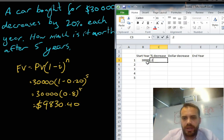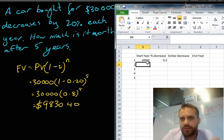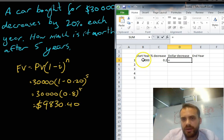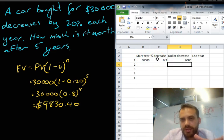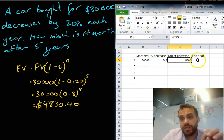It decreased by 20%, which I'm just going to put in our formula as 0.2 here. Now, if it decreased by 20%, it must have decreased by the starting value times that percentage decrease. So, it decreased by $6,000 in the first year.